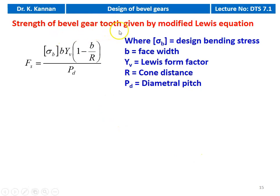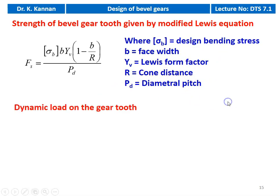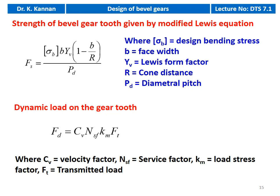The strength of the bevel gear tooth is given by the modified Lewis equation: F = σ_B × Y_V × (1 − B/R) / P_D, where σ_B is the design bending stress, B is the face width, Y_V is the Lewis form factor, R is the cone distance, and P_D is the diametral pitch. Dynamic load on the gear: F_D = C_V × N_SF × K_M × F_T, where C_V is the velocity factor, N_SF is the service factor, K_M is the load stress factor, and F_T is the transmitted load.